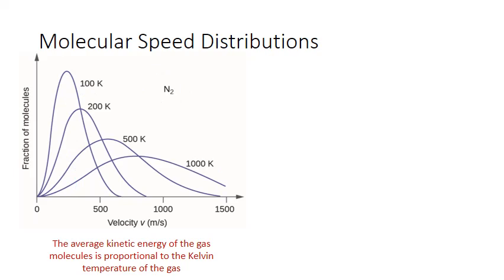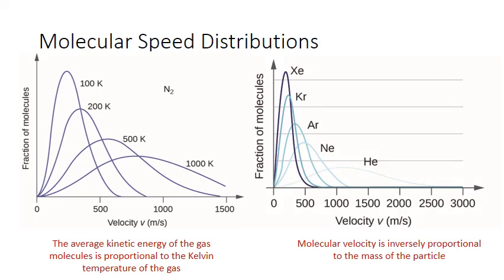If we keep temperature constant, molecular velocity will be solely dependent upon the molar mass of the gas — how large that particle is. This molecular velocity distribution is for one temperature but several different gases. Xenon is the heaviest, and the heaviest gas has the lowest velocity distribution with the lowest average velocity. Helium is the lightest gas and has a much larger spread of velocity distribution with the average velocity occurring at a much higher rate than for any of the other gases. So molecular velocity is directly proportional to temperature and inversely proportional to the mass of the particle.